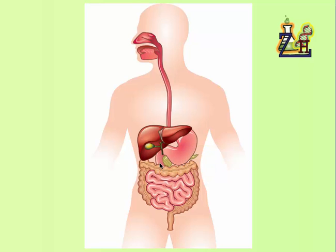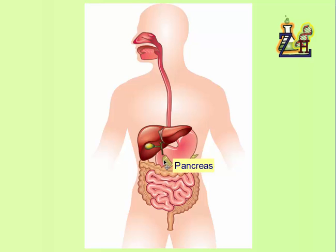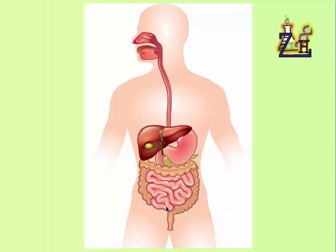The stomach is attached to the small intestine. Behind the stomach there is the pancreas, which is a gland. It is a very important gland for digestion and other body processes. It also has a duct that transports pancreatic juice to the small intestine. After the small intestine ends, we start with the large intestine.